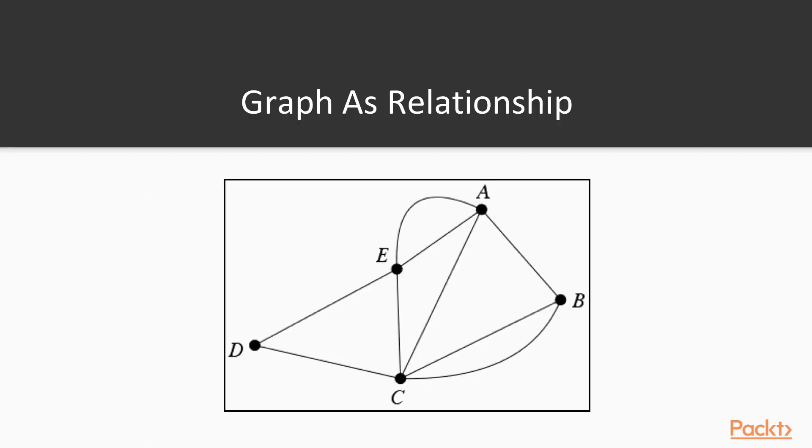Graph can be depicted as relationships. We can see that we have five vertices here and for example from A to E we have some kind of edge. Edge is pointing from A to E and actually there are two edges from A to E.